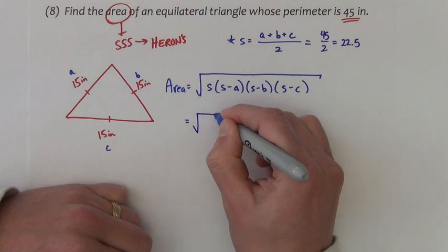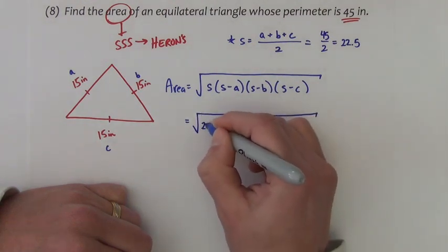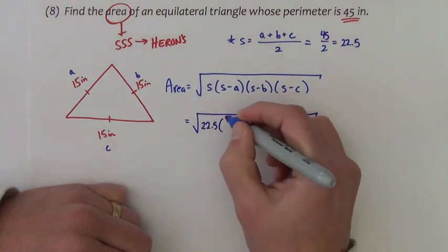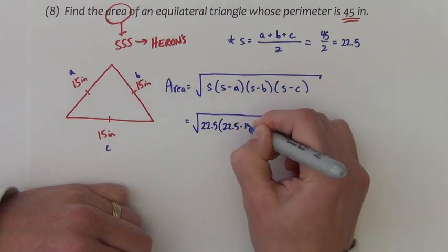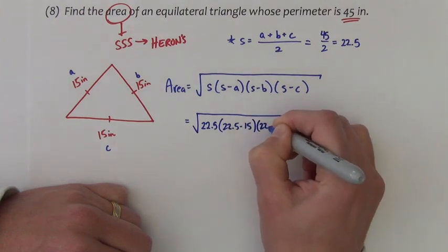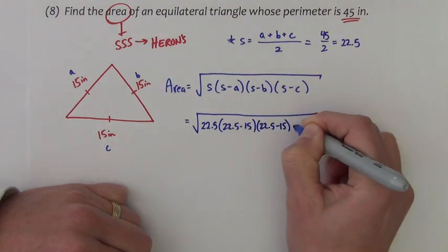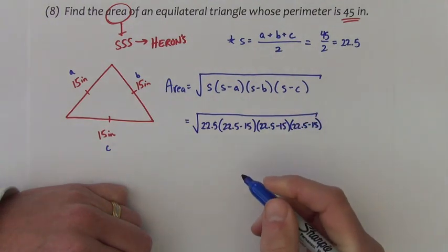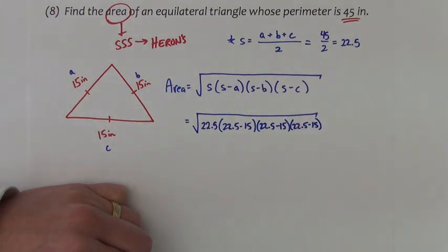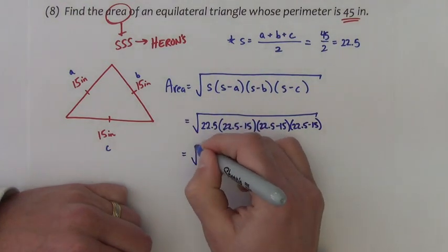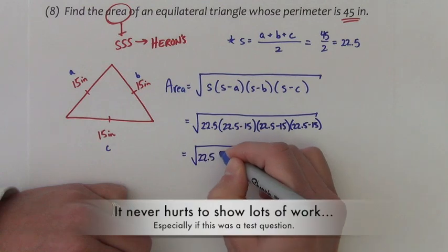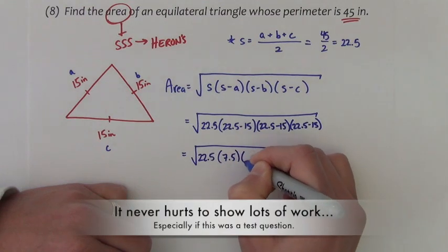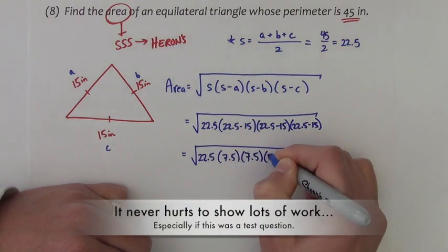So we would have 22 and a half times 22 and a half minus 15, 22 and a half minus 15, 22 and a half minus 15. 22 and a half minus 15 is 7 and a half. So we have 22 and a half times 7 and a half, 3 times.